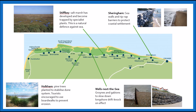So one of the places we can talk about is Stiffkey. A salt marsh has developed there and it has been trapped by specialist plants — this is a natural defence against the sea, so it's a soft engineering technique. It's kind of just letting it do what it does best, which is working very well, and it's again an environmentally important area. Another soft engineering technique is at Holkham, where pine trees have been planted to stabilize the sand dune system. Boardwalks have also been created and tourists are being encouraged to use the boardwalks to reduce footpath erosion on the sand dunes.